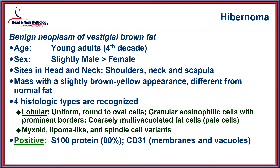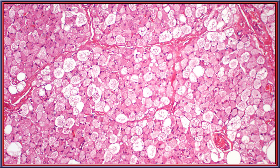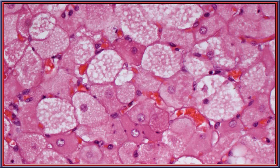Hibernoma is a benign neoplasm of vestigial fat, affecting young adults slightly more often in men, tending to involve the shoulders, neck, and scapular region. There are four histologic types, with the lobular type — consisting of round to oval cells with granular eosinophilic cytoplasm and prominent borders — being the most common. They react with S100. The cut surface is brown and homogeneous, with an alternating pattern of dark and light cells and a microversicular pattern to the cytoplasm on high power.